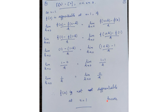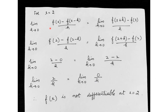For x = 2: checking in the same pattern, the left-hand limit gives 2/h and right-hand limit gives 0/h. Since 2/h ≠ 0/h, f(x) is not differentiable at x = 2 either. This is the answer to question 10.